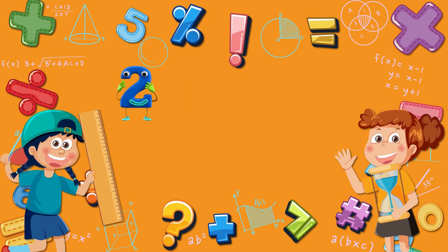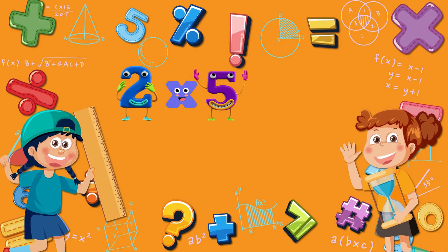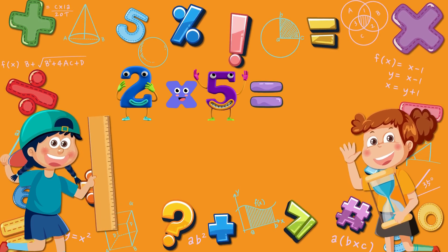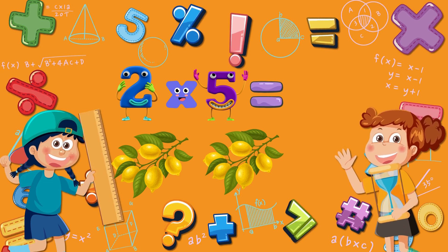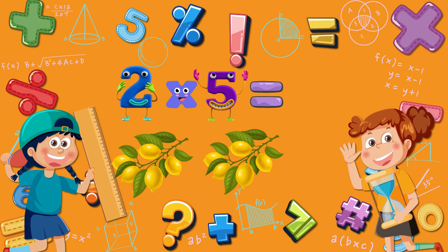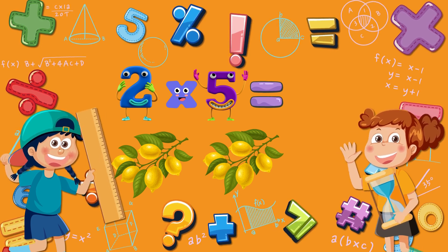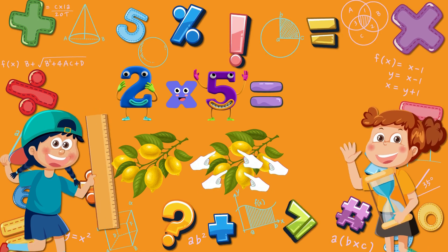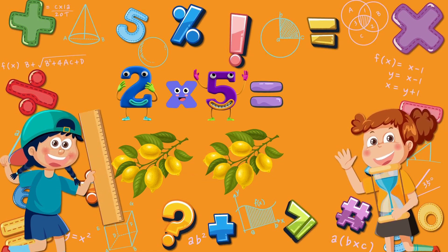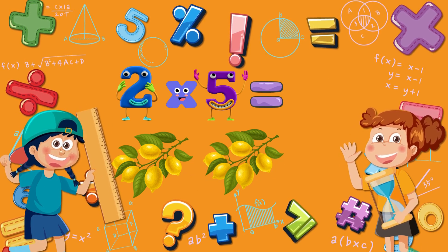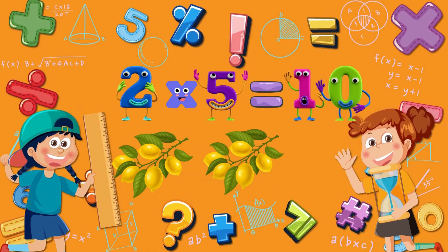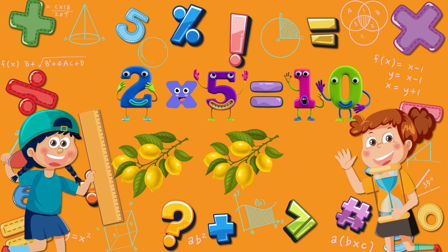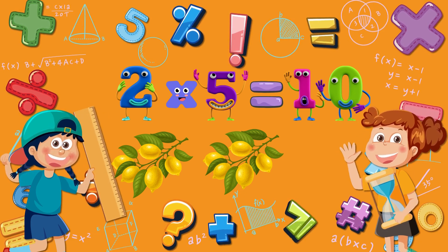Two times five is equal to? Two branches, each with five lemons. Five lemons on the first branch, and five on the second branch. Five plus five is equal to ten. Two times five is equal to ten.